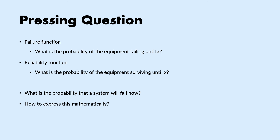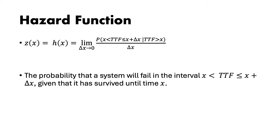We have now studied two useful functions: the failure function and the reliability function. But what if I want to know the likelihood that the system will fail right now, given that it has survived so far? We express this mathematically with the hazard function, which involves conditional probability. We set a very small time interval using a limit, and calculate the probability that the time to failure falls between x and x plus that tiny interval, given that the time to failure is larger than x — meaning it has survived so far. This limit of a conditional probability is called the hazard function.